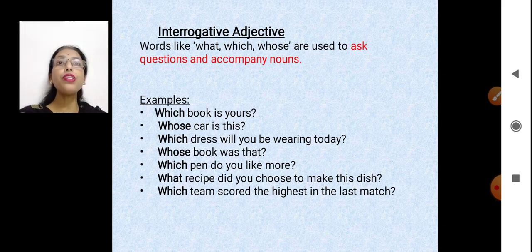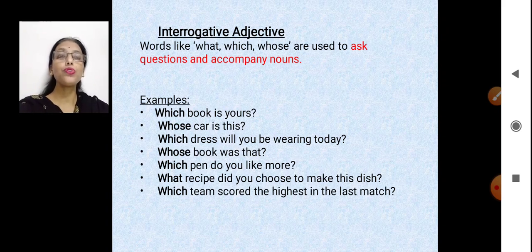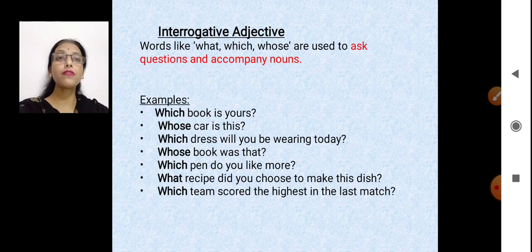Next is interrogative adjective. Interrogation means a question-and-answer session — when we are asking questions. Words like what, which and whose, which are coming alongside a noun, are called interrogative adjectives — 'which book,' 'which place,' 'whose pen.' For example, 'which book is yours' — which and book are coming together, so which is the interrogative adjective.